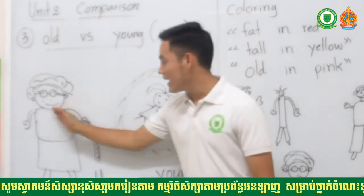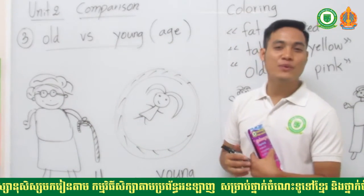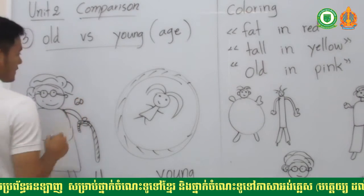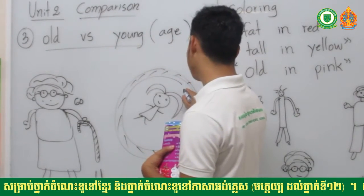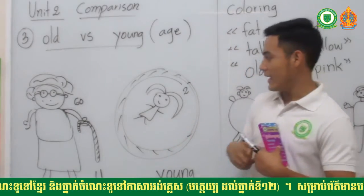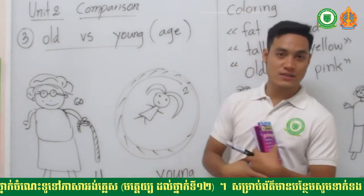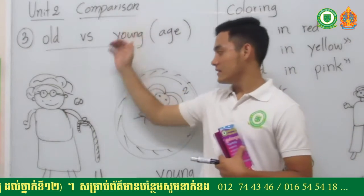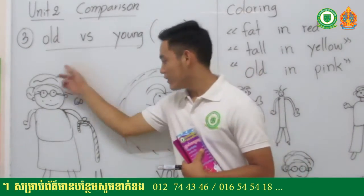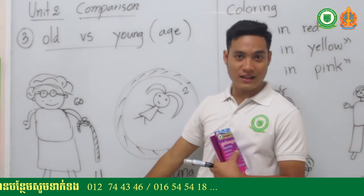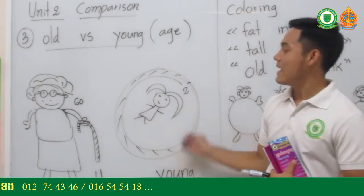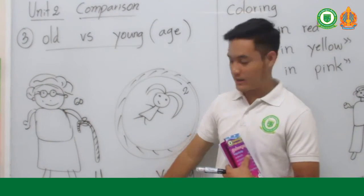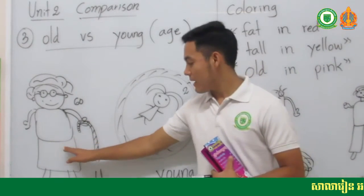Look at the baby and grandma — which one is old and which is young? Grandma is 60 years old and the baby is 1 or 2 years old. Sixty is more than two, so grandma is old. Two is less than sixty, so the baby is young. Read together: grandma is old, the baby is young.